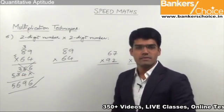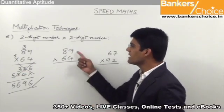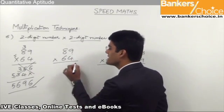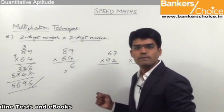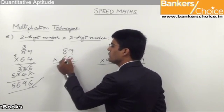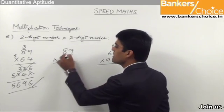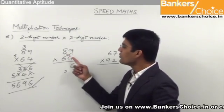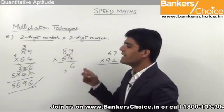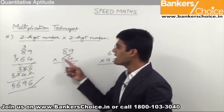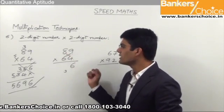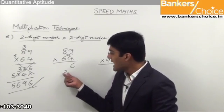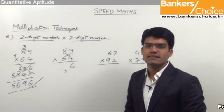So let us see how to go ahead with this procedure. The first step is to multiply the unit spaces — that is 9 into 4. 9 into 4 is 36, so we take 6 in the answer and 3 gets carried forward. The second step is cross multiplication of unit spaces and 10 spaces — that means 8 should be multiplied with 4 and 6 has to be multiplied with 9, and their sum has to be obtained. So 8 into 4 is 32 and 6 into 9 is 54. 32 plus 54 is 86. 86 plus 3 (carried forward) is 89. So we take 9 in the answer and 8 is carried forward.